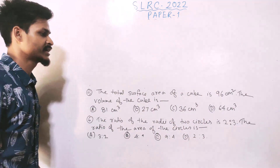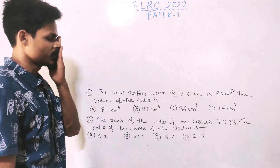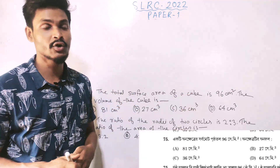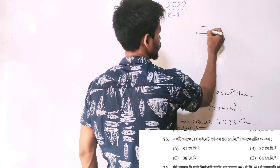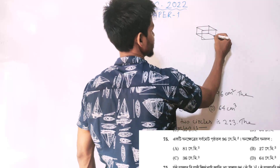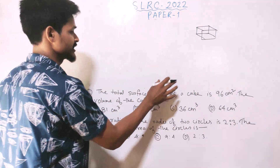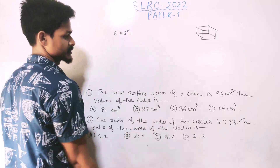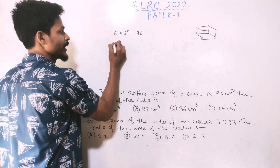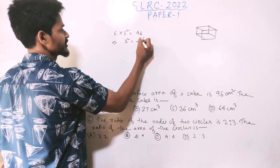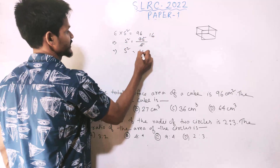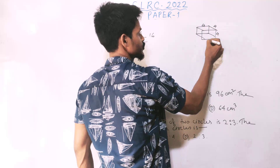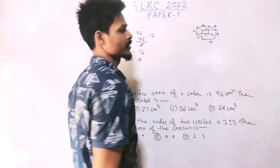Question 5: The total surface area of a cube is 96 cm². Using the formula: 6 times side squared equals 96, so side squared equals 16, meaning side equals 4 cm.